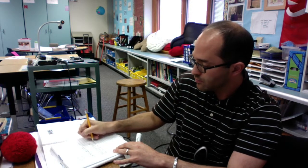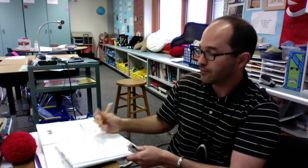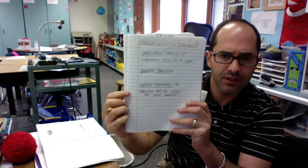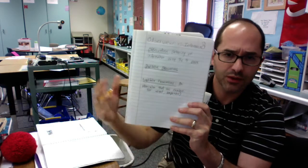So next to quantitative observations in your notebook, you're going to write an observation that uses numbers. Example, weight, temperature, length, things like that. You can write that for quantitative. An observation that uses numbers. Example, weight, temperature, length.